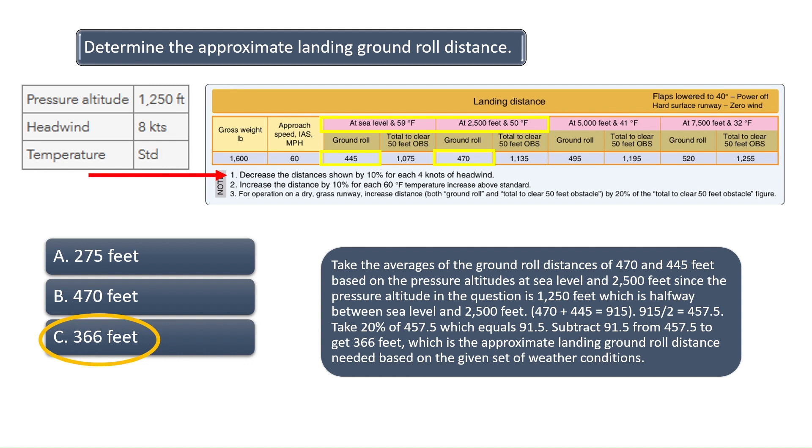366 feet would be the approximate landing ground roll needed if the pressure altitude were 1,250 feet, there was 8 knots of headwind, and the temperature was standard.